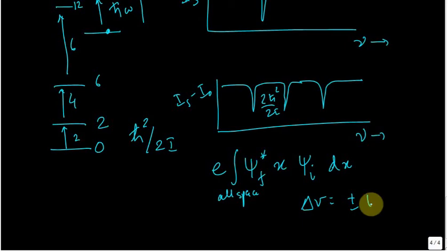In a similar fashion, if you look at the Legendre polynomials that are also given in Atkins and try to do the same thing, you have to get delta l is equal to plus minus 1.